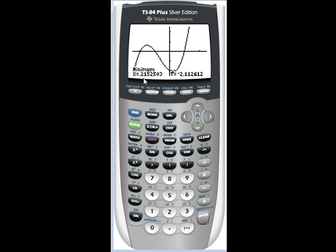And 0.21 is my x value and y equals negative 2.11. Now what's interesting about that is I would have guessed that my local minimum would have been exactly halfway between negative 1 and 1, which would have been at 0. But it's not. So that's kind of interesting.